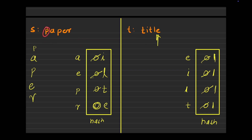If you observe carefully, P is marked to T, so wherever P comes it can be replaced with T. A is marked with I, so wherever A comes it will always be replaced with I. So now you have a clear idea about isomorphic strings. Let's understand the second example to build more intuition.